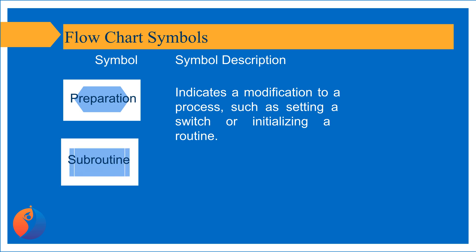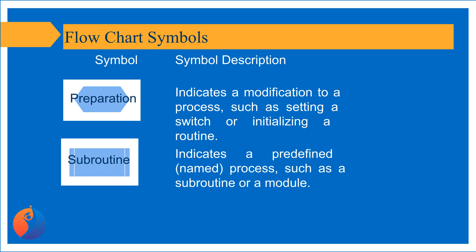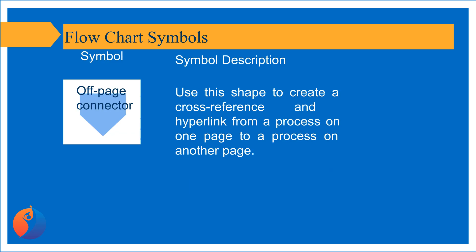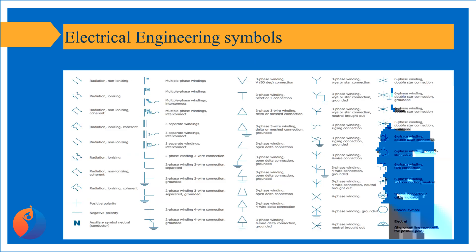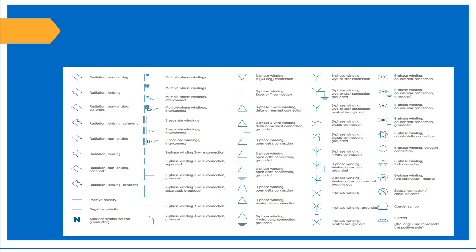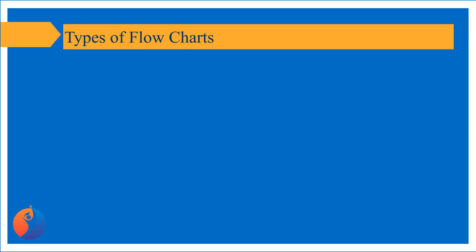Subroutine — indicates a predefined, named process, such as a subroutine or a module. Off-page connector — use this shape to create a cross-reference and hyperlink from a process on one page to a process on another page. There are some other symbols used for electrical engineering. You can download the details from www.template.net.